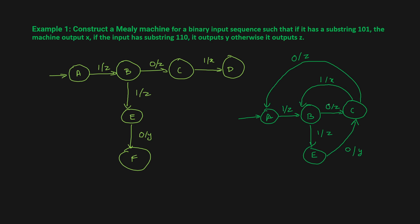Let's trace the input 1,0,1,0. You are in state a, get input 1, go to b with output z. Get 0, go to state c with output z. Get 1, come back to state b with output x. So once you encounter 1,0,1 you get output x. Then you get 0 and encounter output z.